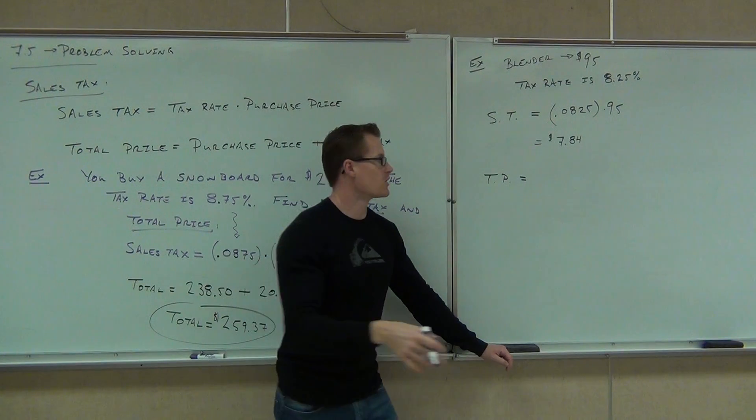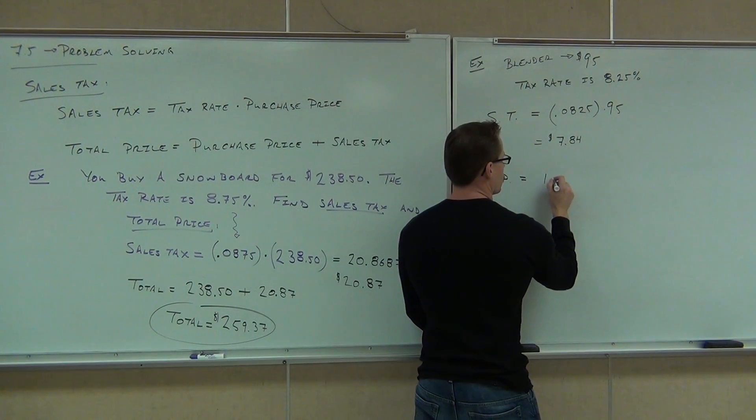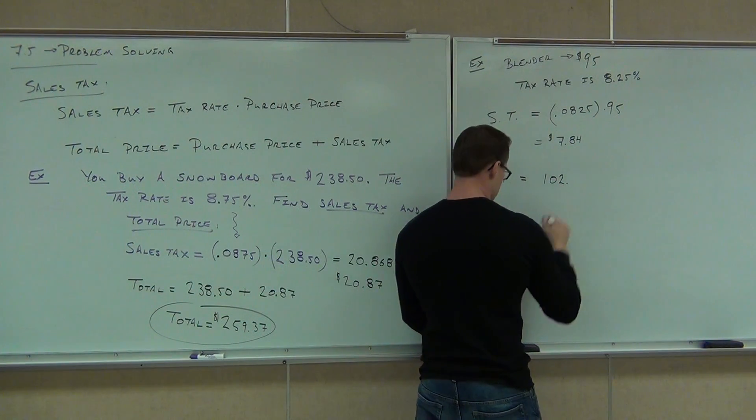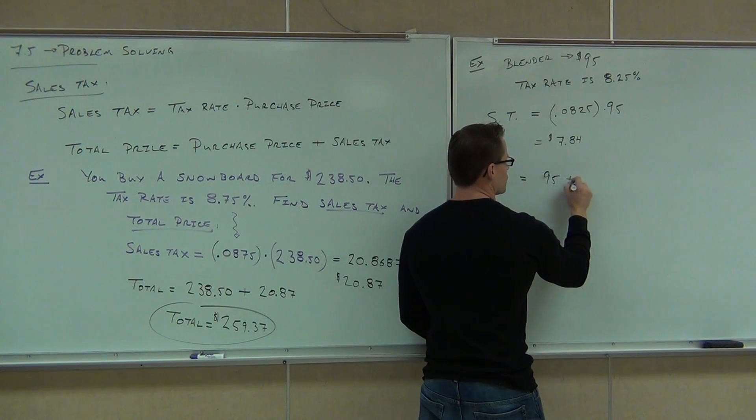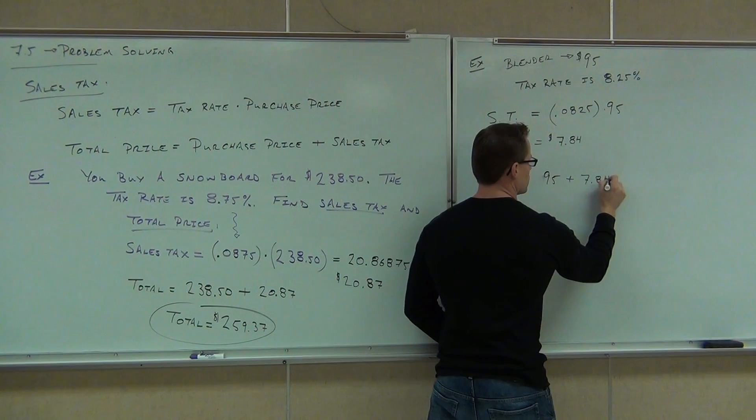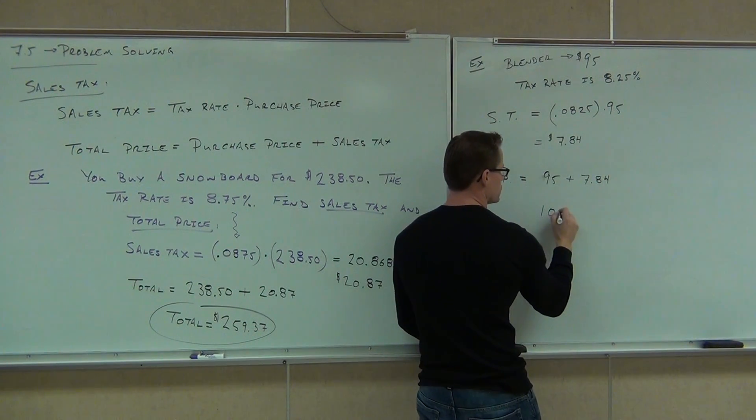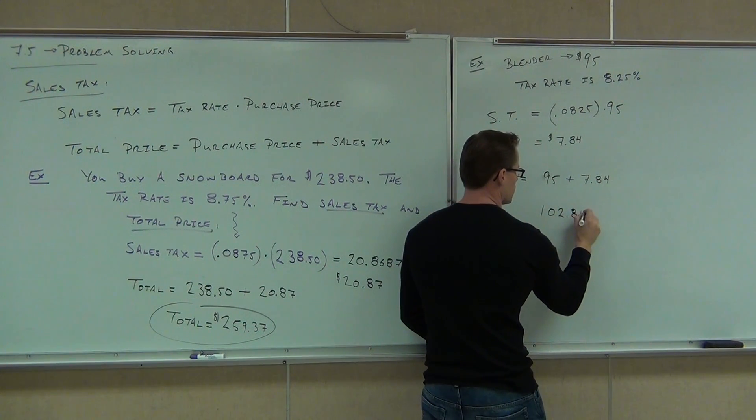So if you add that on to the $95, you're going to get $102. I'll show you the work here too. You're taking the $95 plus the $7.84, and you're going to get $102.84.